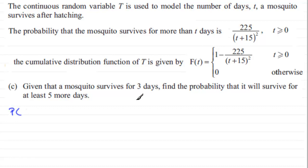Our random variable T represents the number of days the mosquito survives after hatching. So what we're looking at is the probability that it survives for more than eight days given that we know it survived for more than three days. We've got a conditional probability on our hands here.